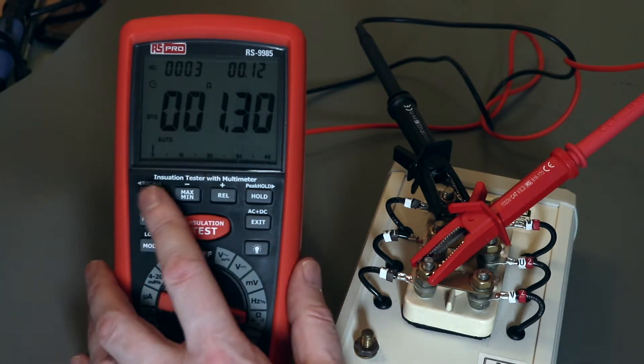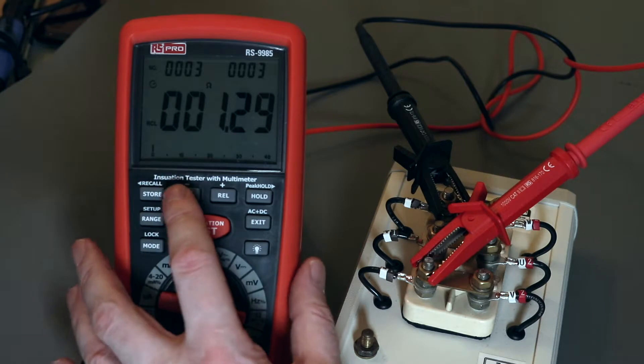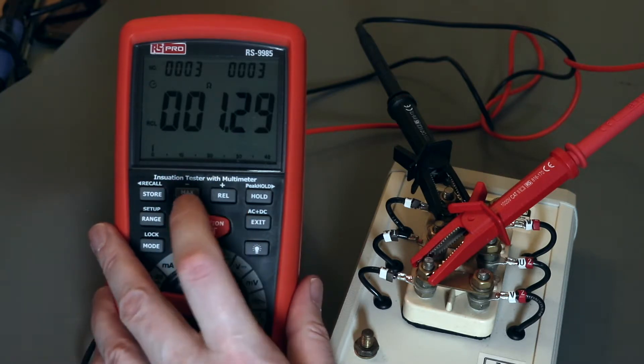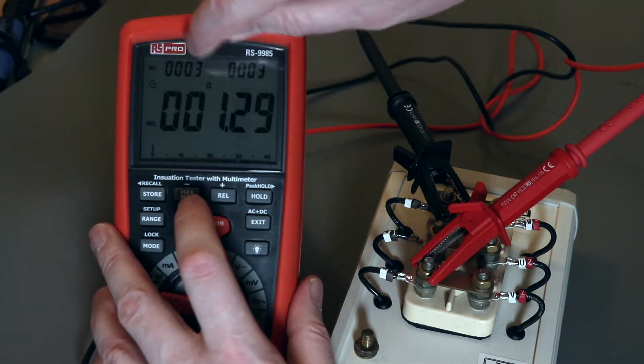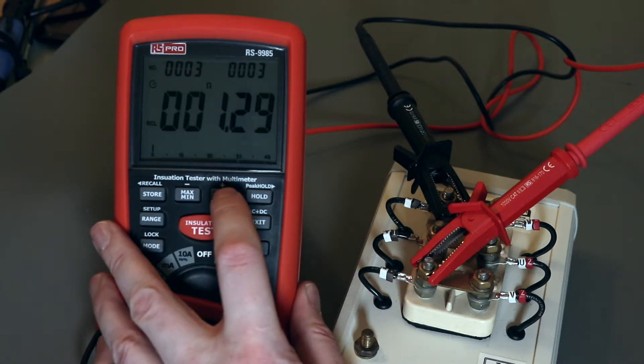And if I want to go back and read them, hold the store key in. It takes me to recall. And then I can move through the memory banks there with the plus and minus keys. When it reaches the last saved one, it actually goes back to zero and then onto one. So you don't have to cycle up and cycle down. You can just cycle through them with using the one key.